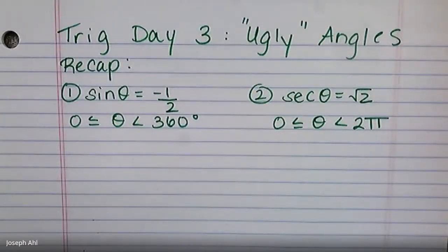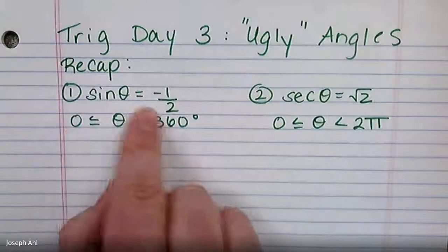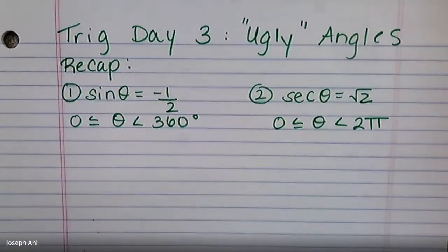Hi Precalc. Trig Day 3 is going to be a short quick lesson on what I've titled ugly angles, and I realize that might sound a little scary to start but you'll see what I mean in a moment. We're going to quickly start by recapping a process where we can work backwards to find the angles that satisfy something like sine theta equals negative a half or secant theta equals radical two.